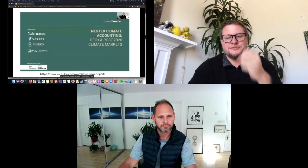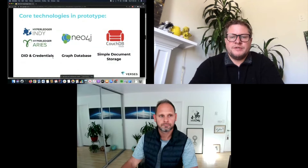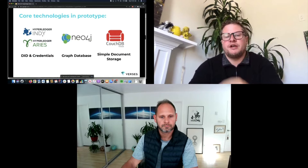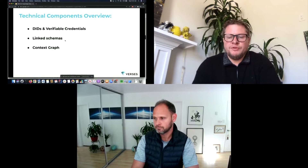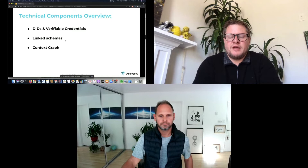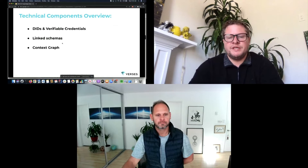We've been working closely with the Open Earth Foundation and Yale Open Innovation Lab to apply these technologies to the challenge of climate. We've prototyped both verifiable credentials and dynamic adaptable schemas related to interoperability of data used for climate accounting. There's an hour-and-a-half-long full demo video available if you want to go deep. In the prototype we're using a graph database, Hyperledger Indy and Aries for all DID and credential issuances, and simple document storage. DIDs and verifiable credentials are used throughout — every asset gets a DID, and essentially every identity in the system is a DID in the context graph.